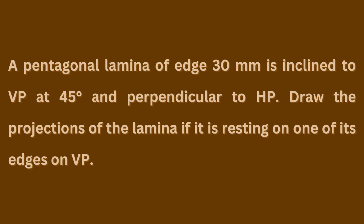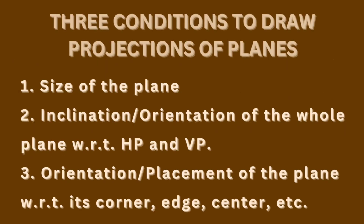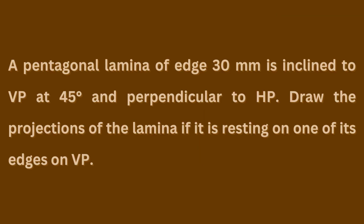This is the case when the plane is inclined to one of the principal planes and perpendicular to the other. Draw the projections of the lamina if it is resting on one of its edges on VP. As we know, there are three conditions to solve a question of projections of planes: first, the size of the plane is given; second, the orientation of the whole plane with respect to the principal planes; and third, the placement with respect to one of its edges, corners, or centers. All three conditions are given to us. Let us move to AutoCAD.